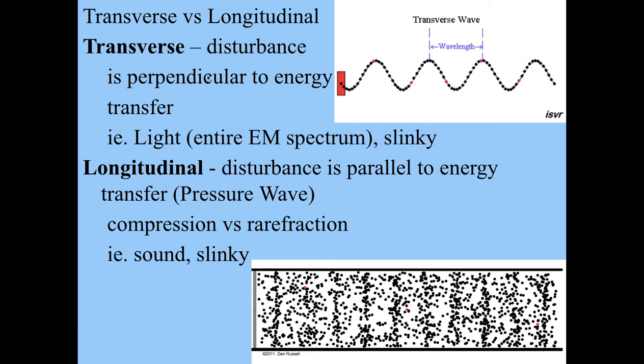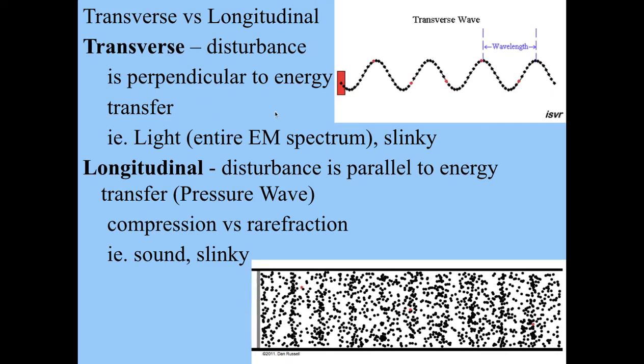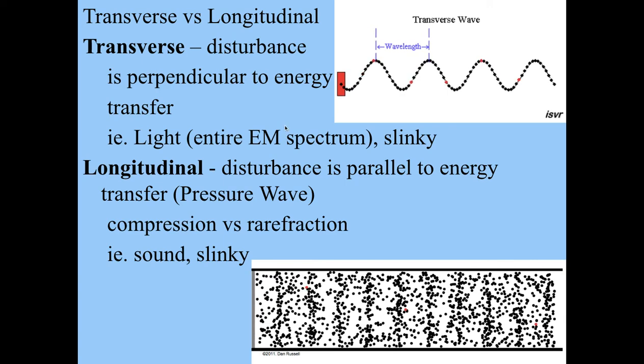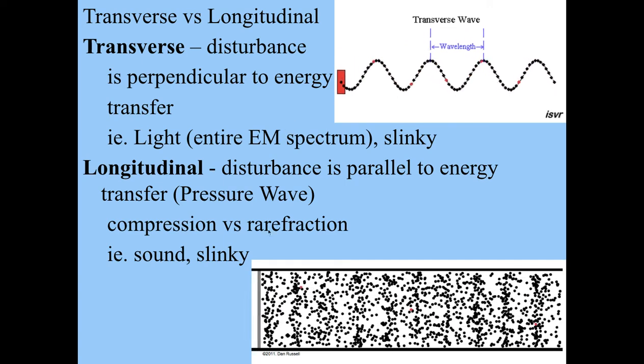So the key word is perpendicular. The disturbance is perpendicular to the energy. Light goes up and down even though there's not a disturbance in medium. It's a disturbance in the field. Slinkies can do that. There's a lot of different things that can do that.